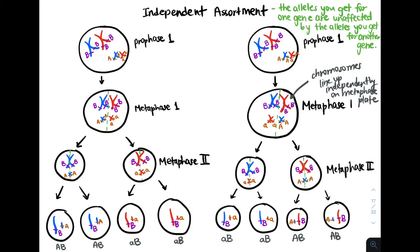Just to reiterate this point — if you look at metaphase 2 in both meiosis diagrams, the cell on the left could have big B and big A alleles, or big B and little a alleles. This is all because in metaphase 1, the chromosomes aligned differently in both diagrams. I hope this video helped you understand independent assortment.